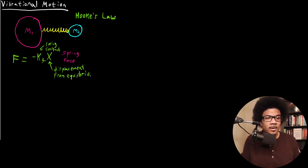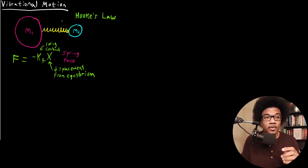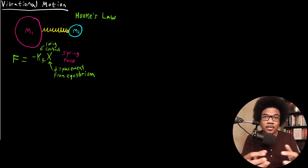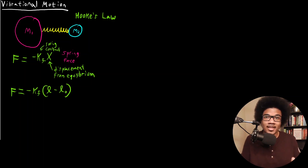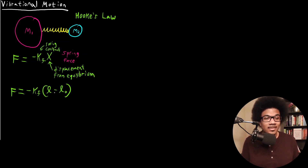We have to be careful about what x means here — it is the displacement from the equilibrium position. You have a spring at some equilibrium position; if you pull on the mass it moves to another position, but the spring brings it back to equilibrium. Another more explicit way to write this is x = l minus l-naught, where l is the current length of the spring and l-naught is the equilibrium length. That distance from equilibrium is your Hooke's Law displacement.